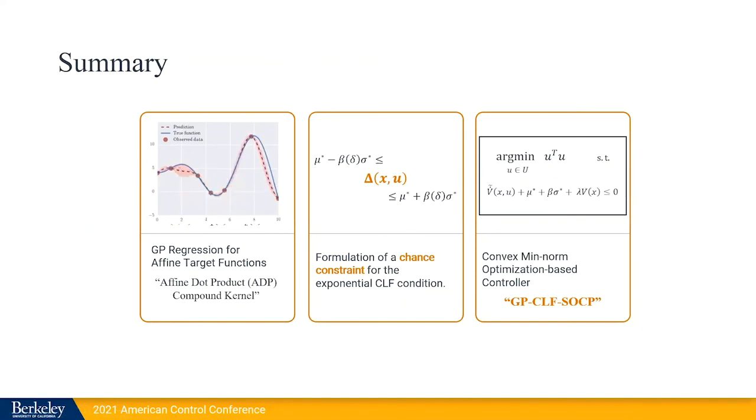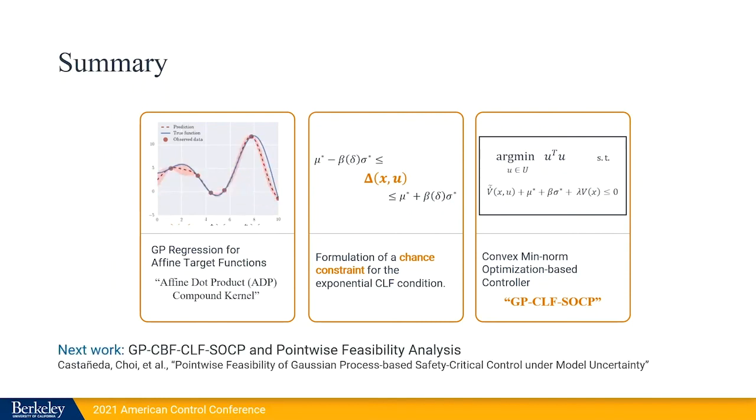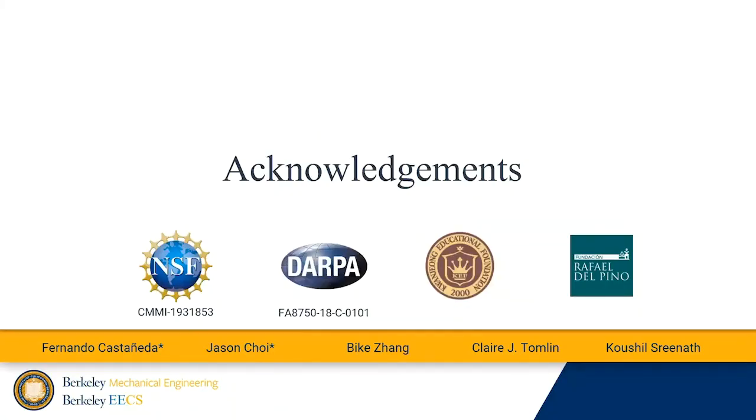To summarize, we have presented an approach to Gaussian process regression for affine target functions through the affine dot product compound kernel. Then we have formulated a chance constraint for the exponential CLF condition that is incorporated in a convex min-norm optimization-based controller that we call GPCLF-SOCP. After the submission, we have extended this work to the safety-critical control case by the use of control barrier functions. And we also present a pointwise feasibility analysis of the proposed optimization problem. This is all. Thank you very much.